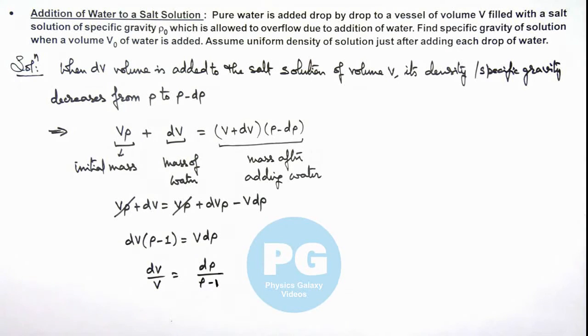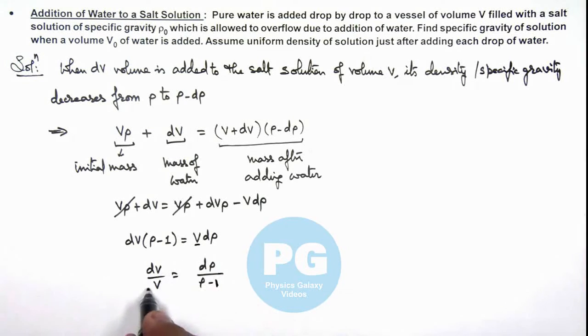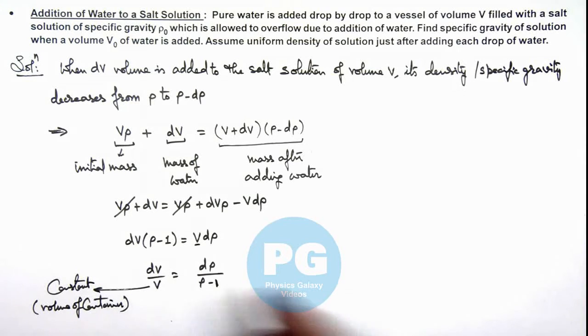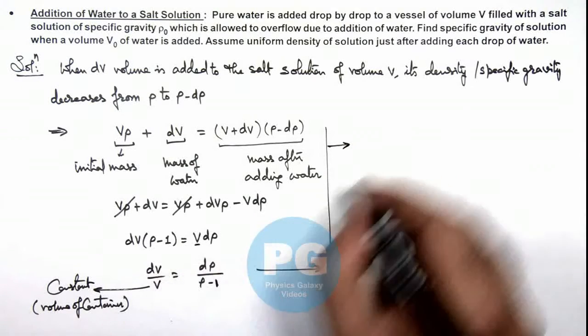In this situation you need to be careful here: the value of V we need to consider as a constant because this is the volume of container. So here you need to be careful that this V will not take part in integration. So when we integrate these terms here, we continue from here.